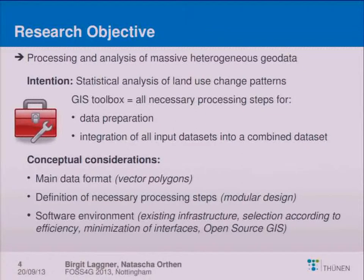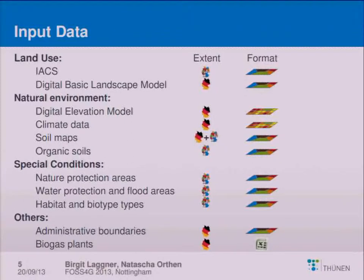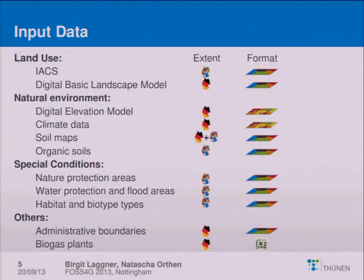The efficiency of the software products has to be considered and interfaces have to be minimized. In that context, it was very important to evaluate some open source software. On this slide, I want to show all used input data. As you can see, there are different formats: most data is in vector format, but there's also raster format available or data in Excel charts. The extent of the data can be nationwide or only available for some of the federal Länder, and there are different sources due to the federal system. There's data for analysis of land use, natural environment, special conditions, and other data.